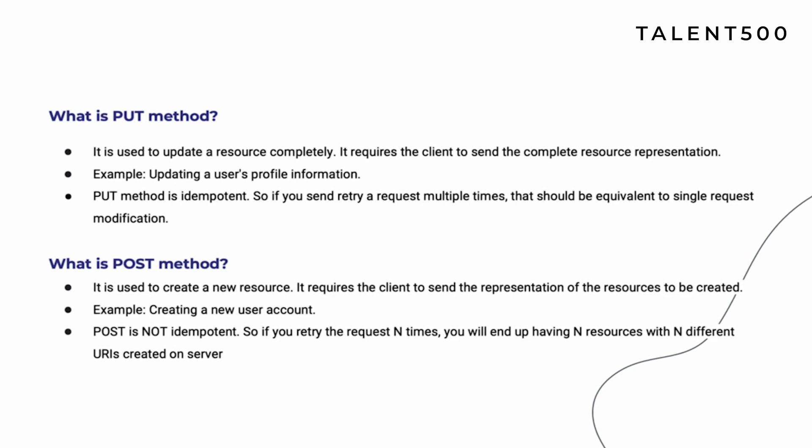If you keep sending a PUT request to update Charles's number to 1-2-3-4-5 ten times, it is not going to make any additional changes with each new attempt. Whatever it did in the first attempt is the final action. If you make the same request again and again, the response remains the same and equivalent to a single request modification — that is called idempotency.